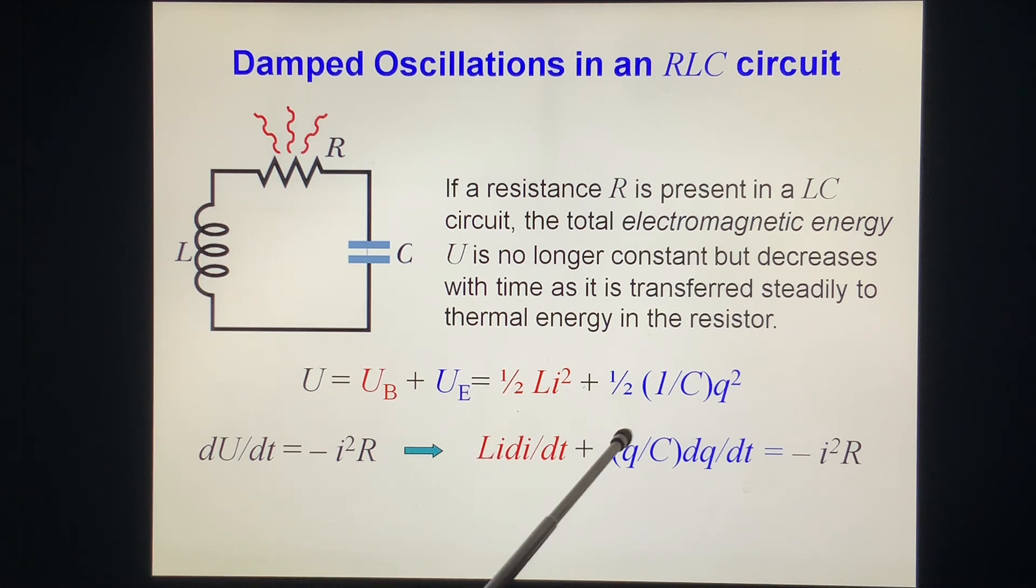We know I equals dq/dt. We put this one inside. L divided here, this dq/dt I cancel out to 1 I. So we get L times the secondary derivative of q with respect to t. dq/dt equal to I, so we put I here. We can cancel one I on both sides. We get L times d²q/dt² plus R dq/dt plus q/C equals zero.